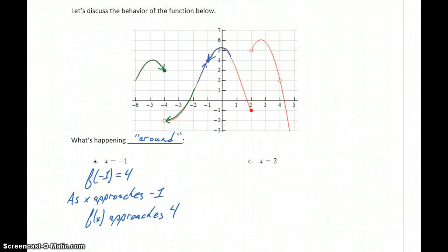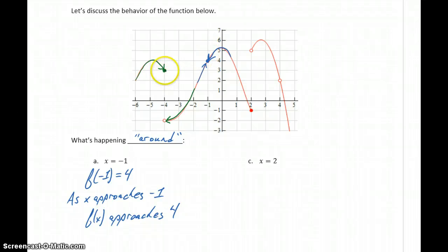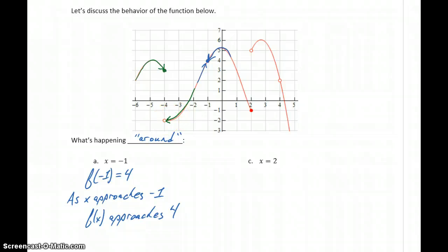So it's possible, as in case A, that as we approach from the right, from the left, and consider the point at the function itself, we have the same value. But here, since we've got a break in the graph, we see that as we approach from different directions, we end up with different values.